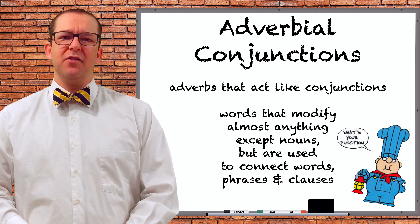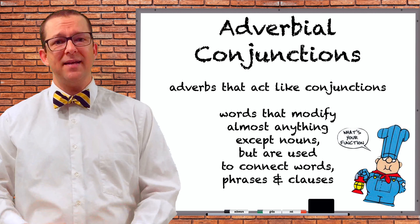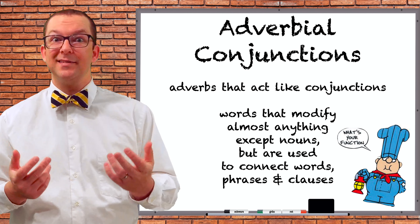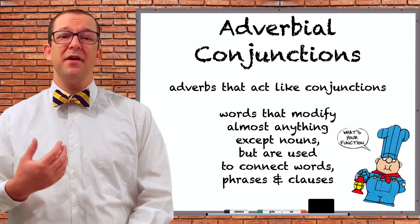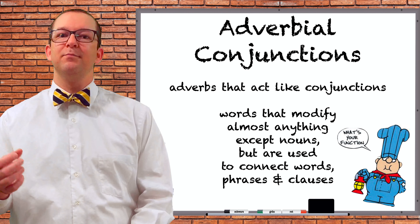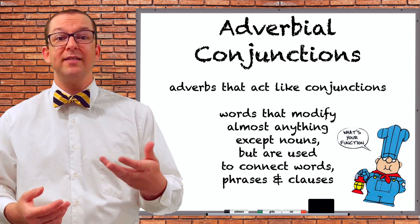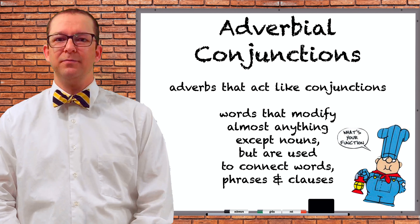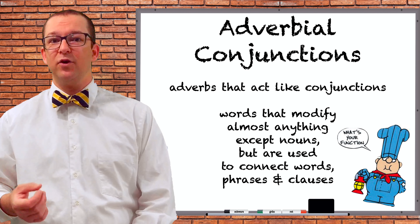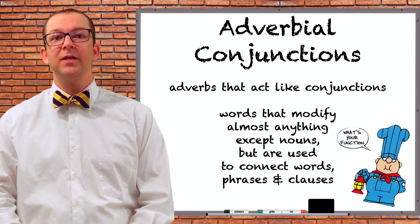First, as we did with the other lessons about conjunctions, we have to define what adverbial conjunctions even are. Bad definition first: they are adverbs that act like conjunctions. More precisely, they are words usually considered adverbs — words that modify basically anything in the sentence except a noun — but they are used to connect words, phrases, or clauses, like conjunctions do. For example, trotzdem is usually considered an adverb, but it means however or nevertheless, and therefore could be used as a conjunction.